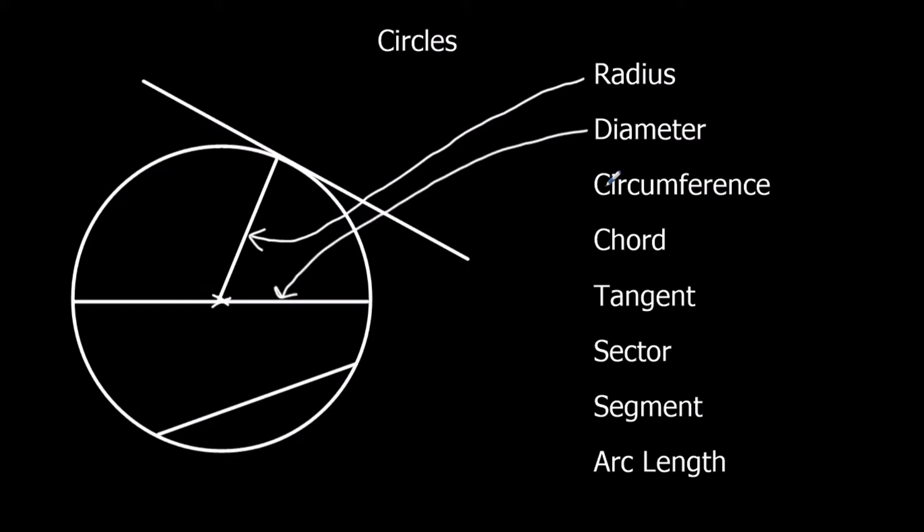The circumference is what we call the perimeter of a circle. So the length around the edge of a circle is called the circumference. I'll just go to there.